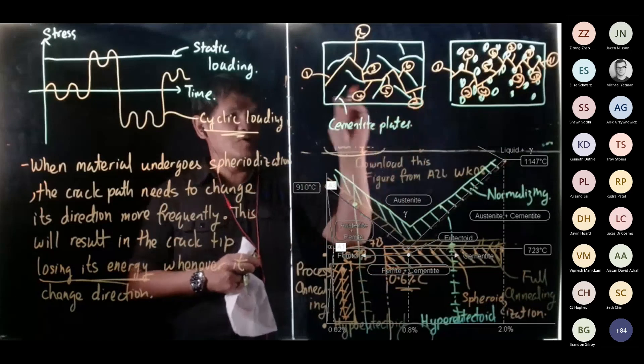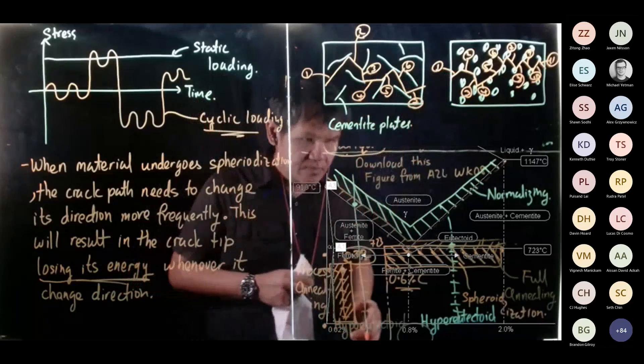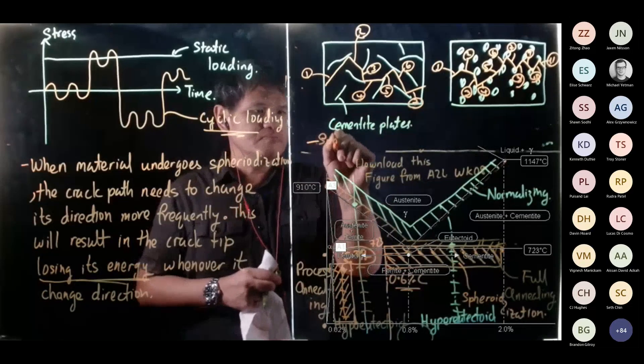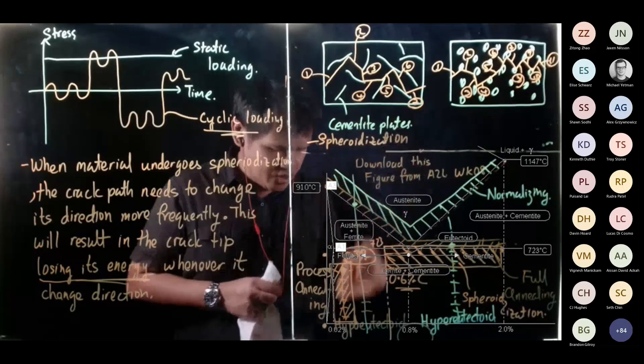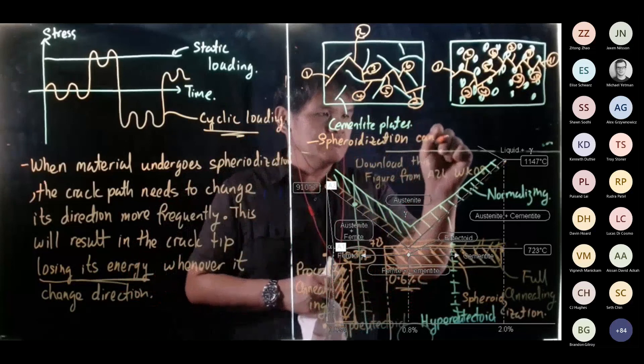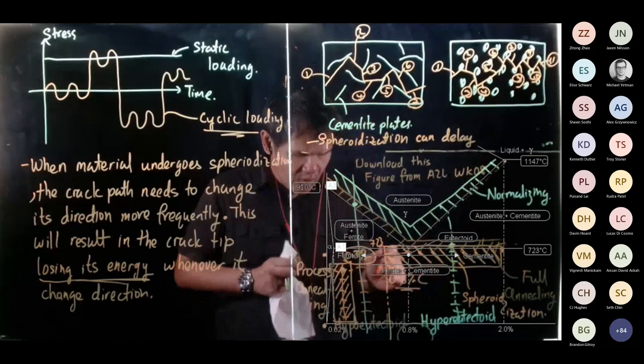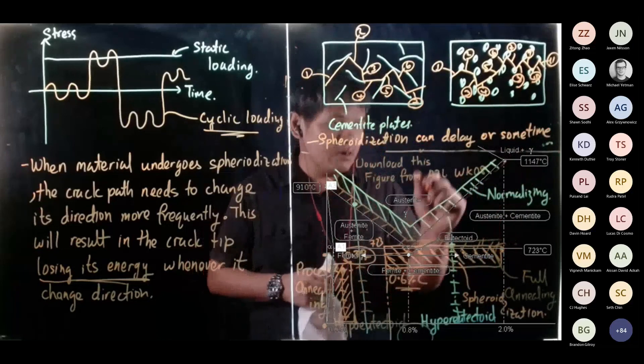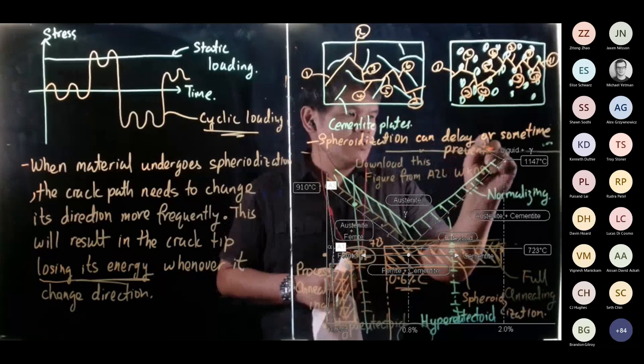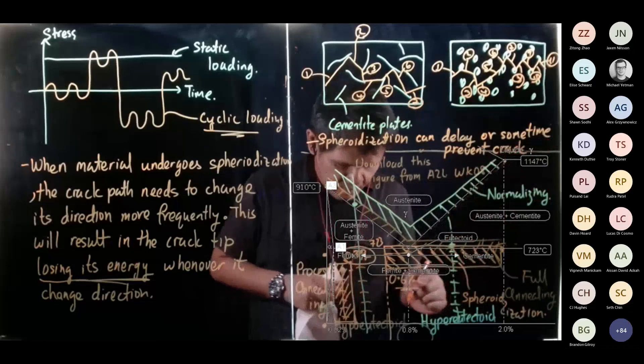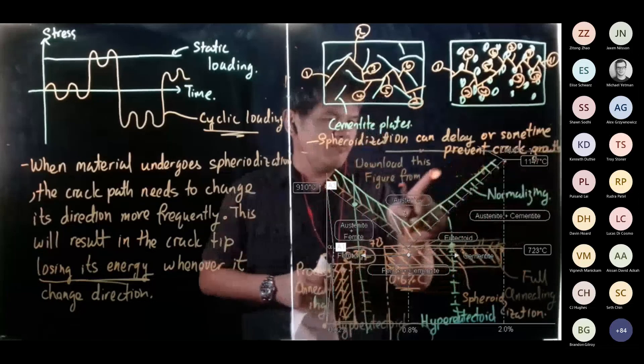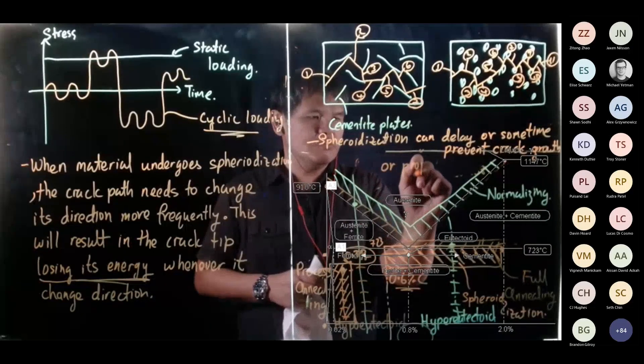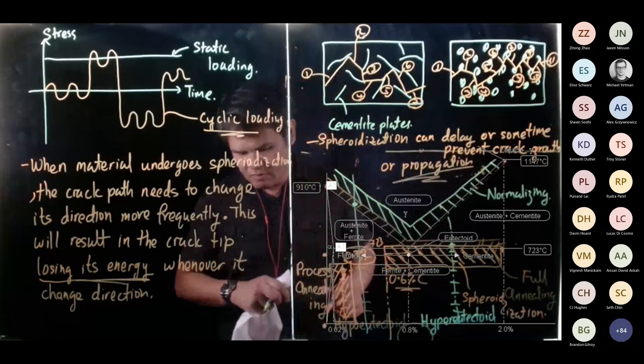As you can see down here, actually it's much more because the dots are pretty big. So what you see now down there is the spheroidization can delay, or sometimes it will prevent crack growth or propagation. The word propagation is more commonly used in material science.